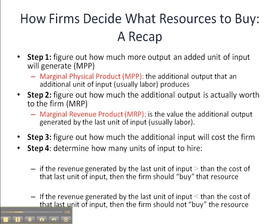In general, the firm wants to purchase units of input up until the revenue generated by the last unit of input is exactly equal to its cost. It's a similar concept to when we discuss the internal workings of a firm, where we set the optimum profit-maximizing rate of output to marginal cost equal marginal revenue. It's the same type of concept. Let's see how it works.